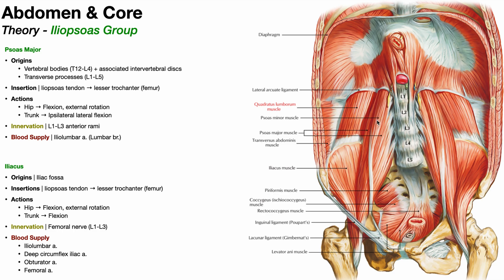If you remove the psoas minor and look behind it, there's a much thicker muscle — all the way from here to here — and that is the psoas major. You can follow its muscle belly going all the way down. Unlike the psoas minor, it exits the pelvic cavity and moves into the anterior thigh where it attaches on the lesser trochanter. And over here we have the iliacus muscle, named because it sits on the iliac fossa of the pelvis.